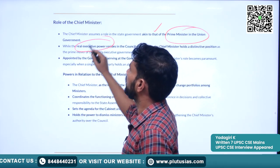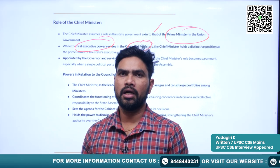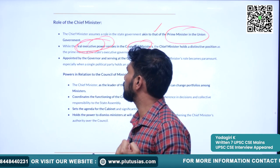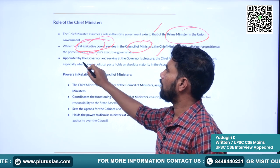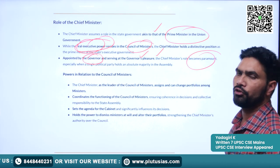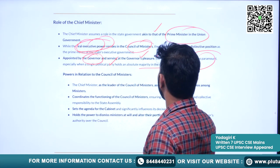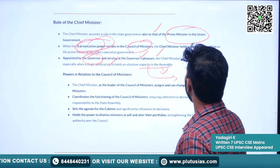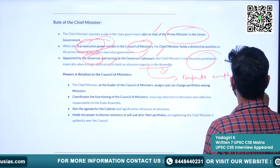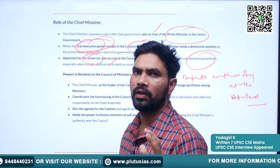The chief minister wields the real executive power — the council of ministers headed by him aids and advises the governor in day-to-day administration. He is appointed by the governor and serves during the pleasure of the governor. His role becomes very important whenever a single political party wields a special majority in the state legislative assembly — in that case, he becomes the de facto authority at the state level.